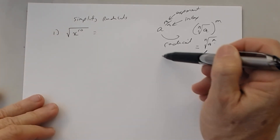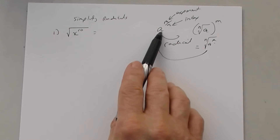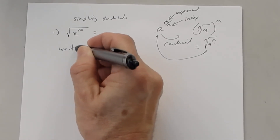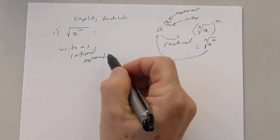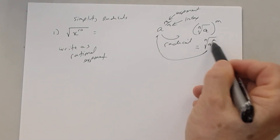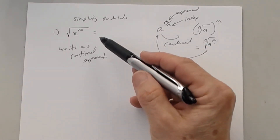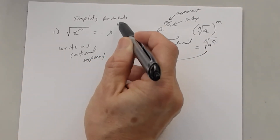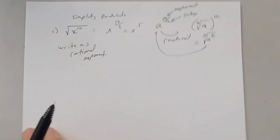What we're doing here is going backwards: you're given a radical and you want to write it as a rational exponent. You have to remember that the index becomes the denominator of that exponent, and the exponent m becomes the numerator. So this became x to the 10th divided by 2, and 10 divided by 2 is 5.